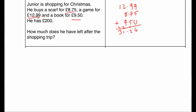And he's got £200 altogether, so we're now going to need to do £200 subtract £31.24, to see how much money he's got left. So 200.00 subtract 31.24, just lining up the digits.